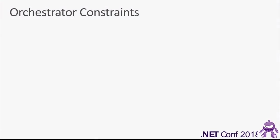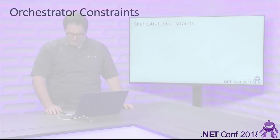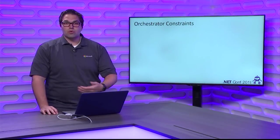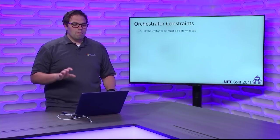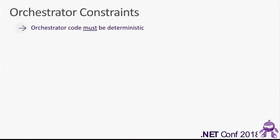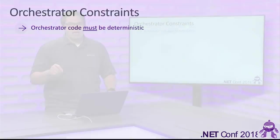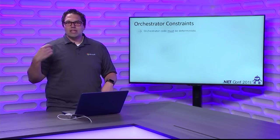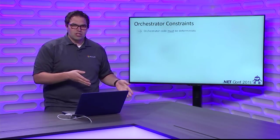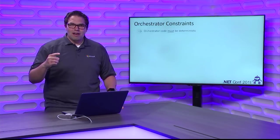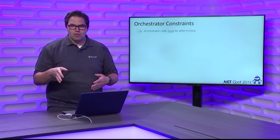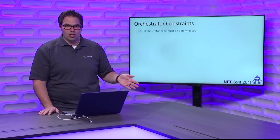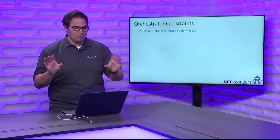Let's come back and talk about some of these constraints. Most of these constraints stem from the fact that this is using event sourcing with replays to work. Orchestrator code must be deterministic. When you understand how durable functions works, this makes a lot of sense. If in my orchestration logic I say get the current time and generate a random number, and based on that do this or that — the problem is every time that function replays, every time that orchestration replays, the result might be different, which means I might be replaying down different code paths than I started. Things are going to get corrupt. Don't do it.